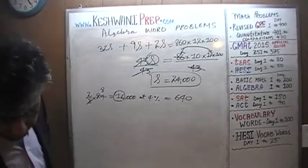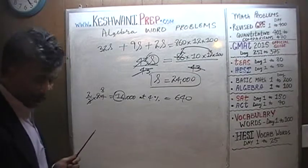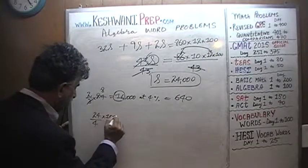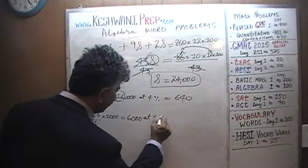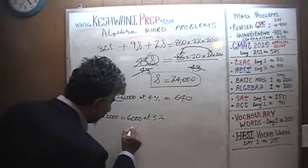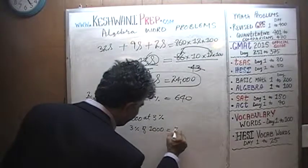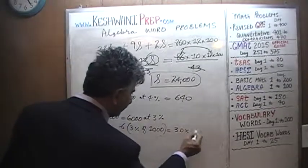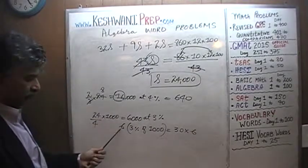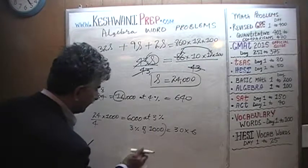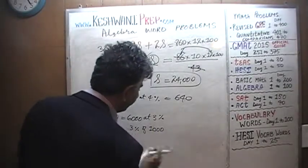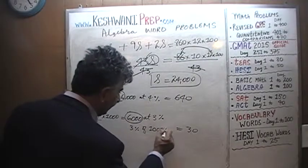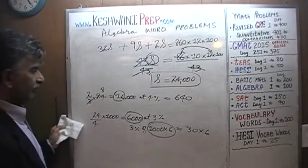One-fourth of $24,000 is $6,000, invested at 3%. 3% of 1000 is 30; therefore 3% of 6,000 is 6 times 30, which is $180. The second account earns $180.